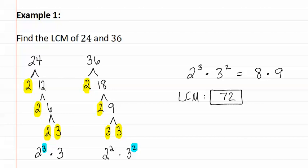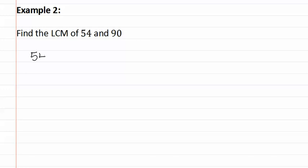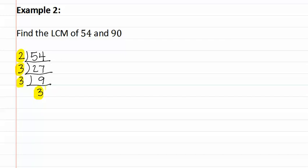Let's look at example two. Example two asks us to find the least common multiple of fifty-four and ninety. Remember, step one is to find the prime factorization of each. So let's start with fifty-four. This time I'm going to show it using a division ladder. Two goes into fifty-four twenty-seven times. Three goes into twenty-seven nine times. And three goes into nine three times. As you can see, I found all prime numbers. Remember, when using a division ladder you must always be using prime numbers.